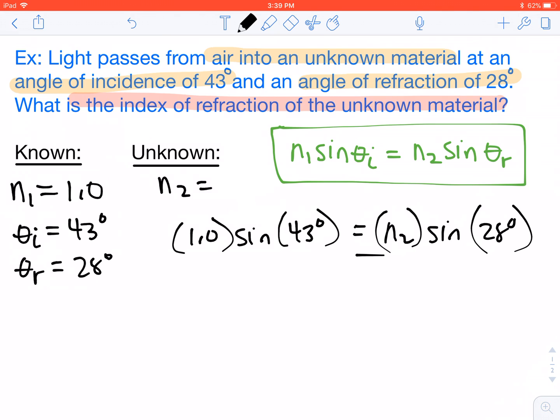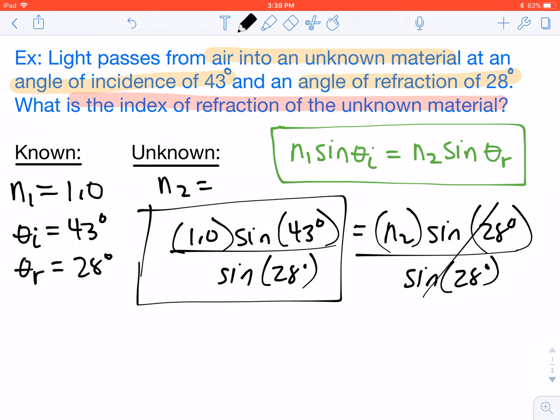So since we want to solve for N2 here, we have to divide by the sine of 28 degrees on both sides. And then we can plug all of that into our calculator. So 1 times the sine of 43 degrees divided by sine of 28 degrees, and that's going to give us our answer. So in this case, N2 comes out to be 1.45.